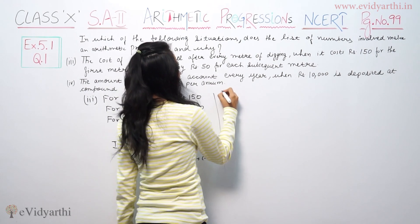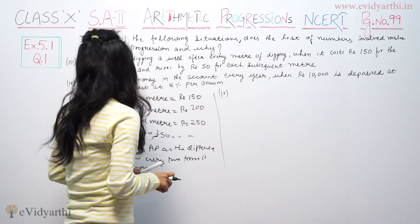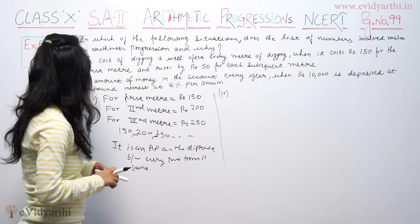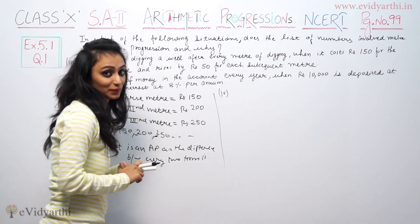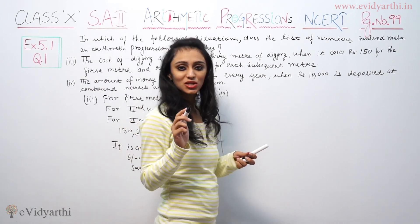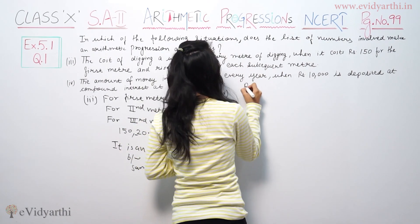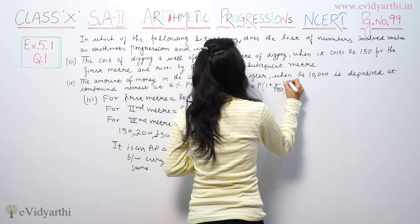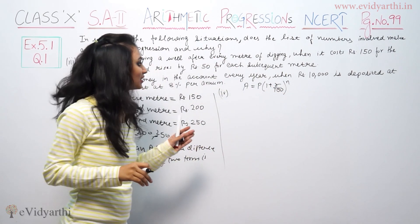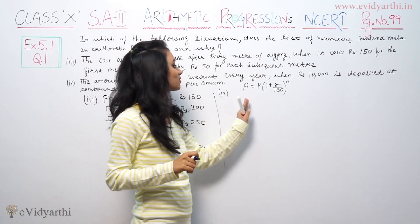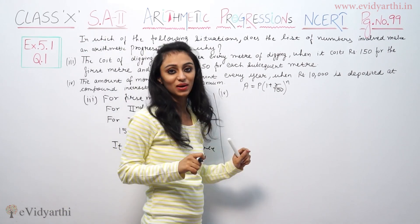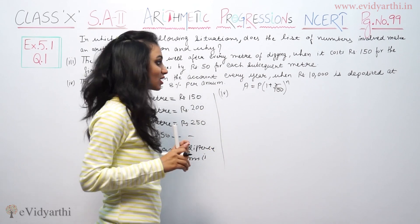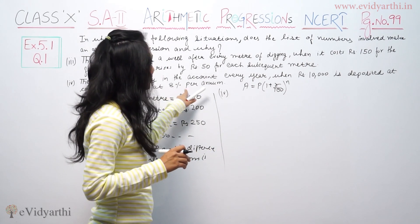Part number 4 asks about the amount of money in an account every year when rupees 10,000 is deposited at compound interest at 8% per annum. For compound interest, we use the formula: Amount = P × (1 + R/100)^n, which we learned in Class 7.